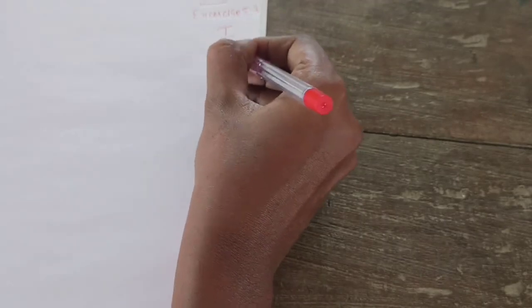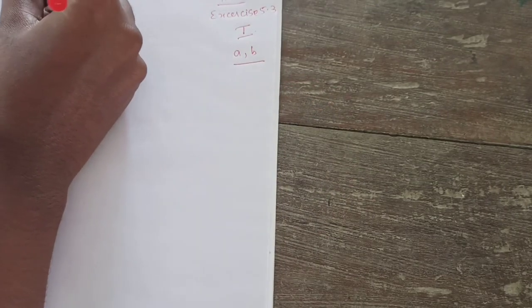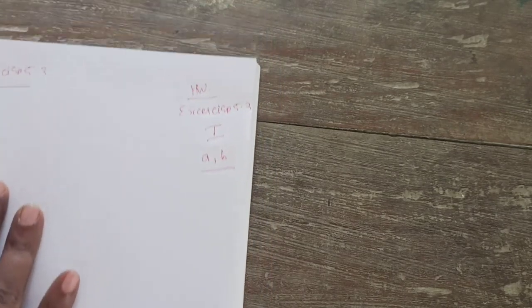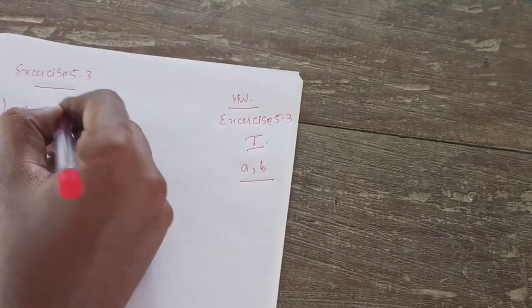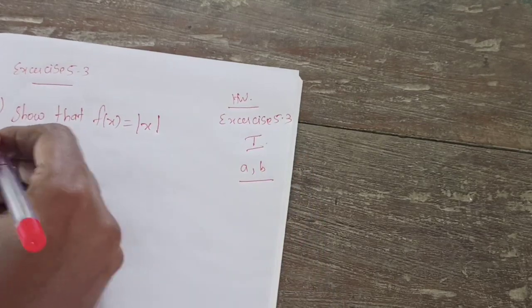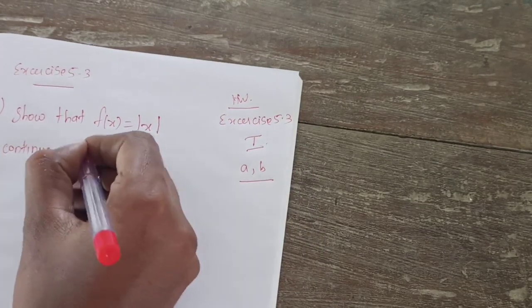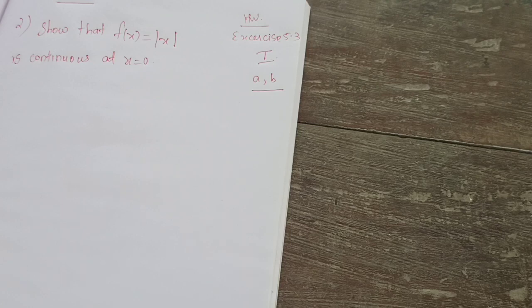Second problem I will do for you. Exercise 5.3, second problem: Show that f of x equal to modulus of x is continuous at x equal to 0. So same as before, but at x equal to 0 we need to prove. There is a modulus here, so keep that in mind.